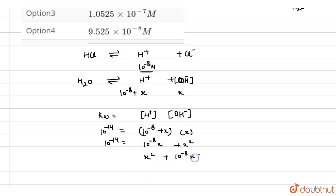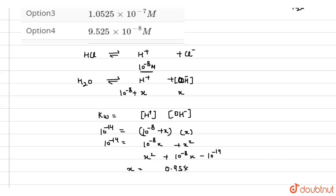Solving the quadratic equation x² + 10⁻⁸x − 10⁻¹⁴ = 0, the value of x comes out to be 0.95 × 10 raised to power minus 7 mole per litre. This is the concentration of OH⁻ ion.